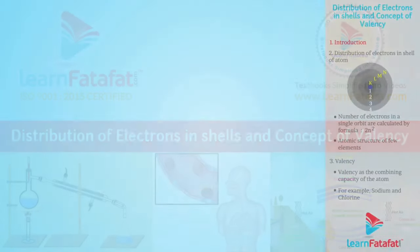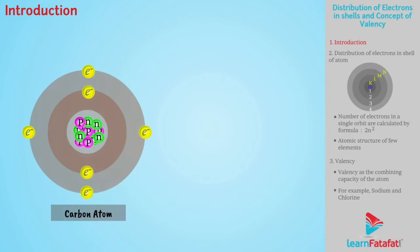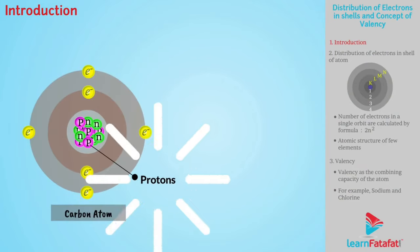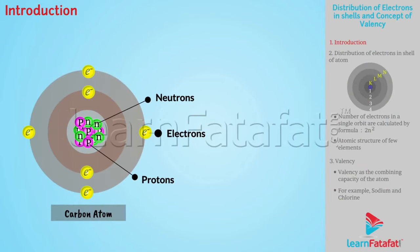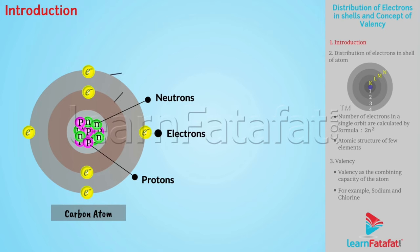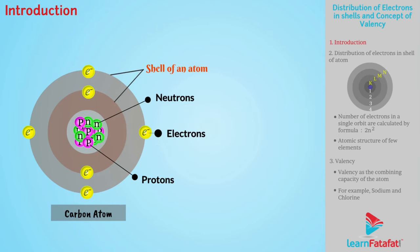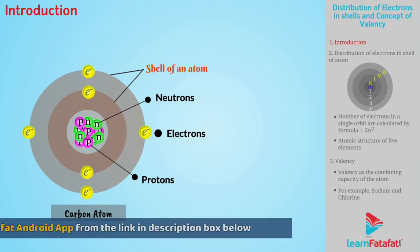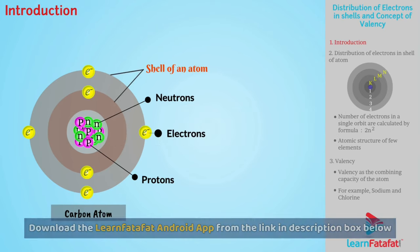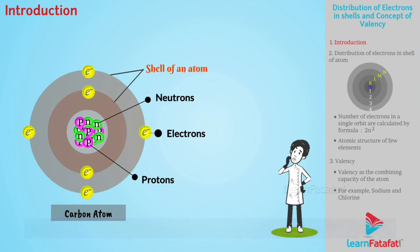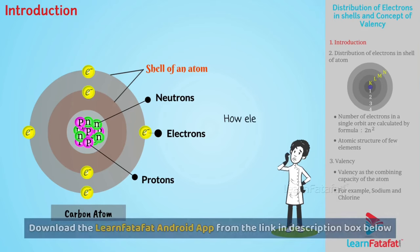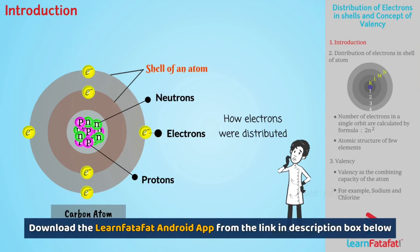An atom is composed of protons, neutrons, and electrons, where electrons are present in the shell of an atom. A major challenge before scientists was to know how electrons were distributed in the shells of an atom.